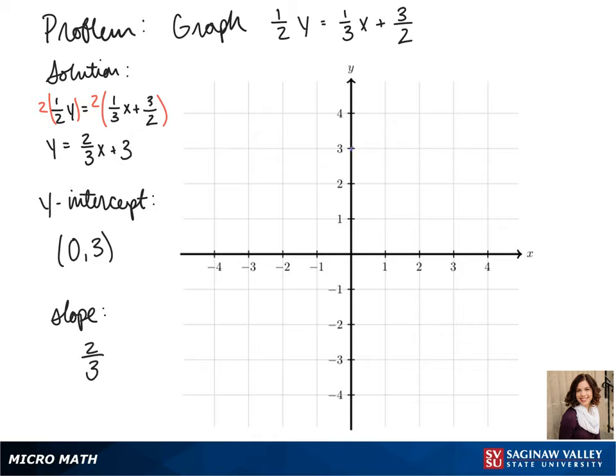So we graph our y intercept at 0, 3. Then we go 2 up and 3 over.